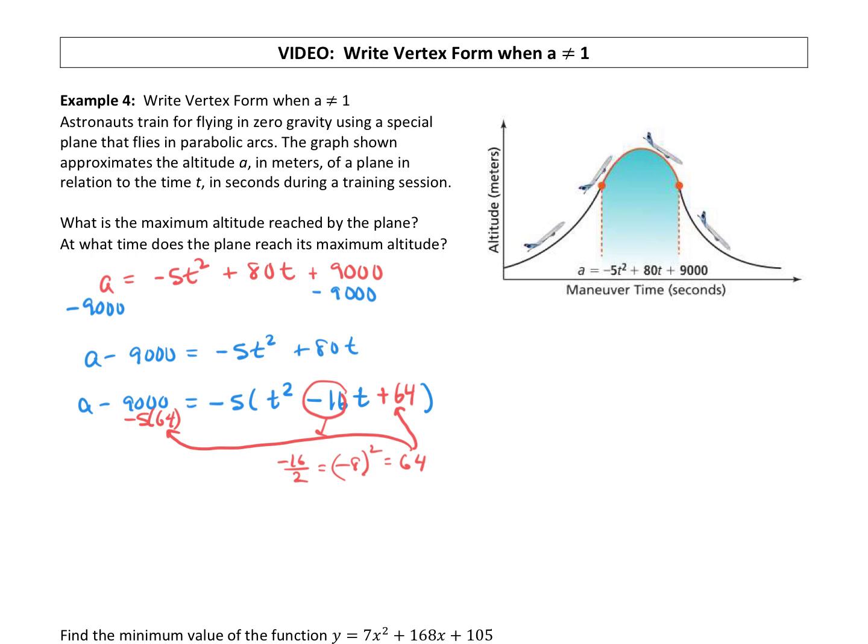Okay, so let's clean this up a little bit. We have a minus 9,000, and then negative 5 times 64 is a negative 320. Equals, over here we have negative 5 times t squared minus 16t plus 64. All right, so we'll go ahead and combine those. Negative 9,000 minus 320 equals.